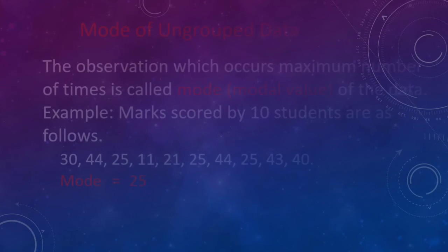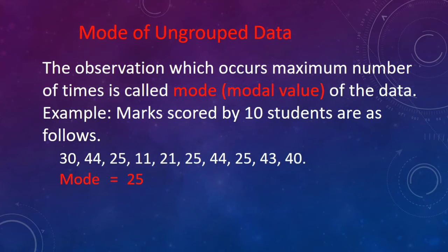Every statistical data has got some central values. The various kinds of central values are mean, median and mode. Here, we are going to study the mode of ungrouped data. The data can be grouped or ungrouped.